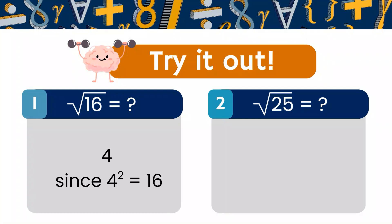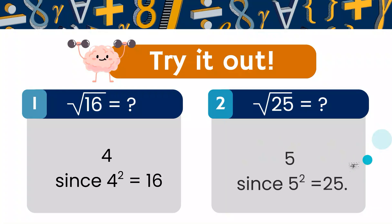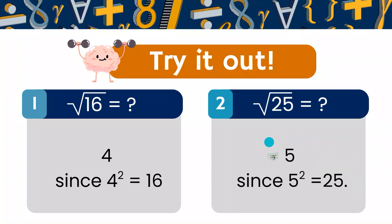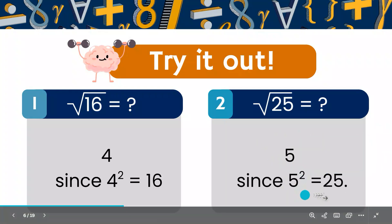Now the second problem: what is the square root of 25? Using the same approach, what number squared will be 25? The answer is 5, since 5 squared is 25. 5 times 5 is 25.